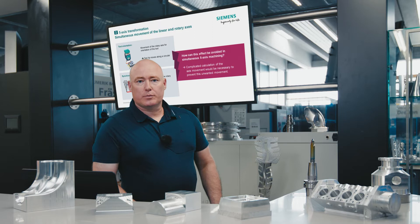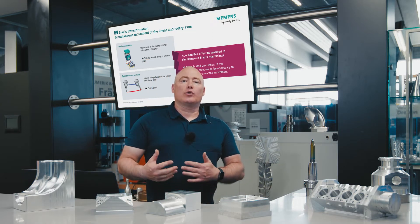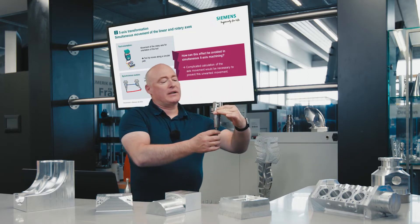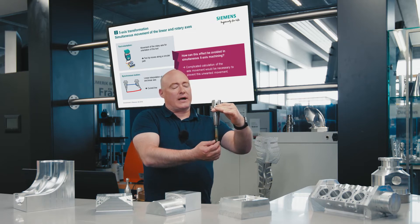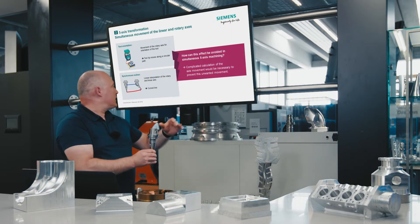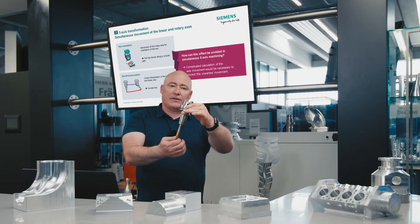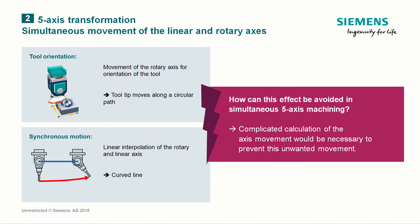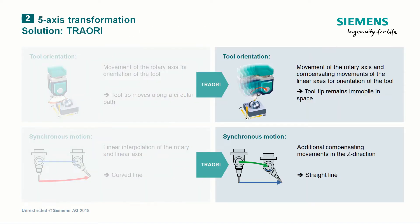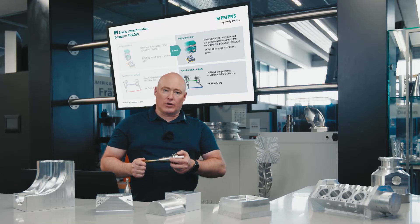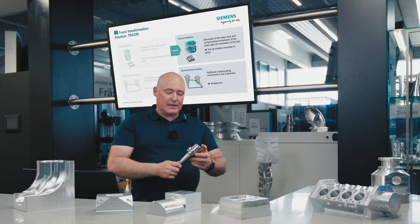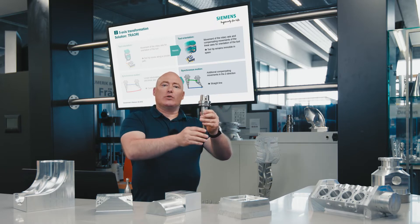Five-axis transformation is the term used for when the linear and rotary axes move simultaneously. Executing these linear and rotary axis movements with a clamped tool produces a curved movement. The solution to avoid this effect is TRAORI. The TRAORI command groups these calculations together — TRAORI consisting of the words transformation and orientation. The effect is that the tool tip remains immobile in space during machining, achieved by an additional compensating movement in the Z-axis during the linear and rotary axis movements.